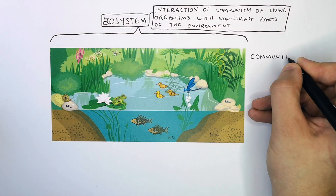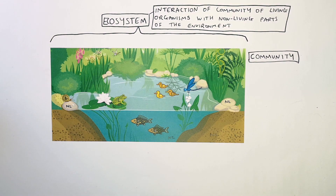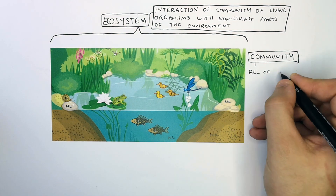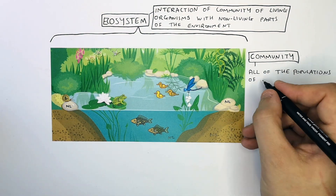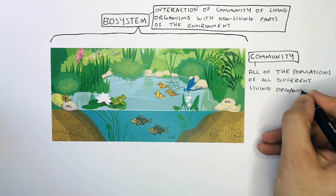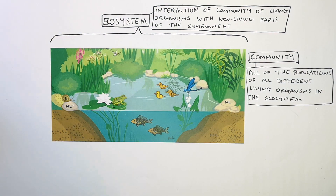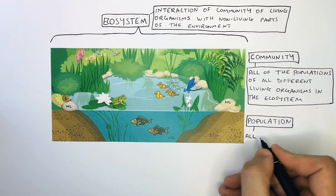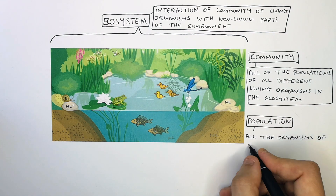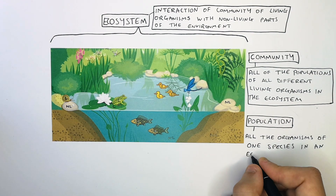A community is all of the populations of all the different living organisms in the ecosystem. Whereas a population is all the organisms of one single species in an ecosystem.